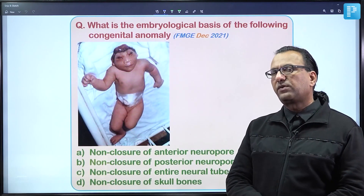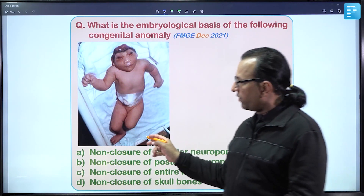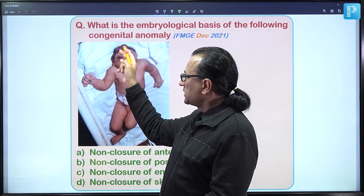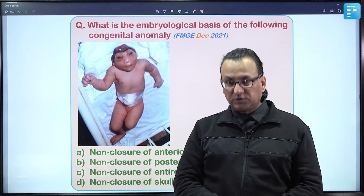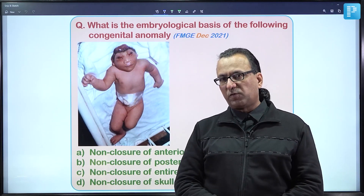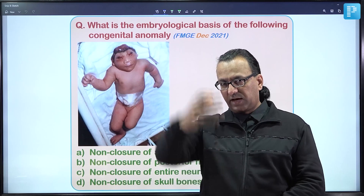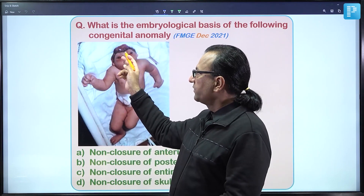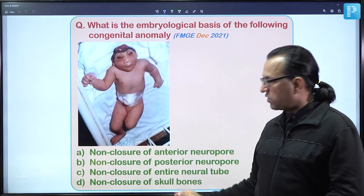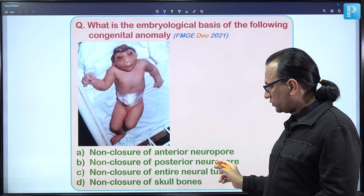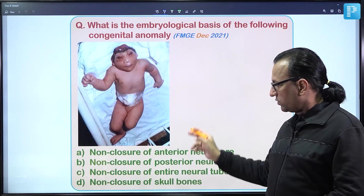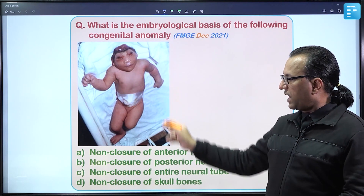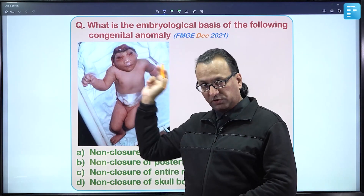A photograph of a baby shows the skull cap missing, the brain exposed to the exterior, and a small brain — this is a case of anencephaly. The options include non-closure of anterior or posterior neuropore, entire neural tube open, or a problem with skull bones. Let us first look at the embryological development of the neural tube.